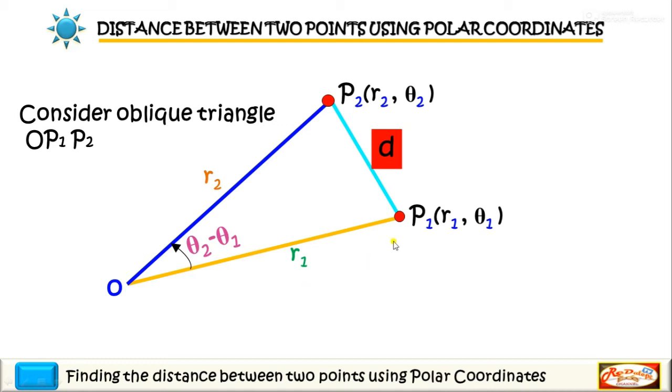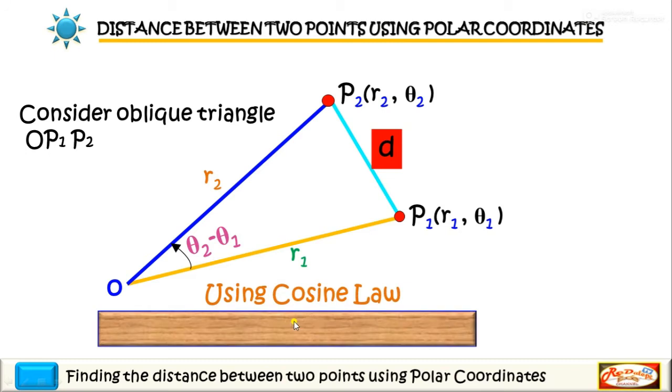Hence, by the law of cosines, the square of the distance d is equal to the square of r1 plus the square of r2 minus twice the product of r1 and r2 multiplied by cosine of theta2 minus theta1, which is the distance formula in polar coordinates.